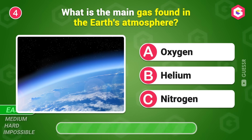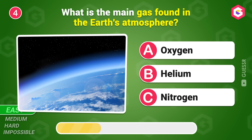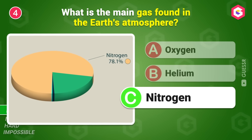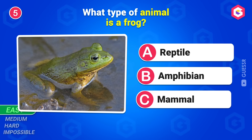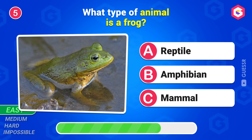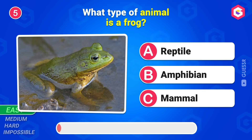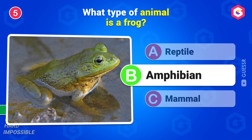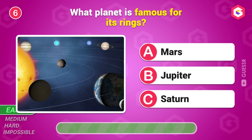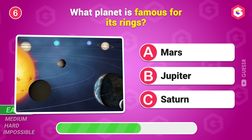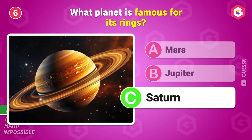What is the main gas found in Earth's atmosphere? Nitrogen. What type of animal is a frog? Amphibian. What planet is famous for its rings? Saturn.